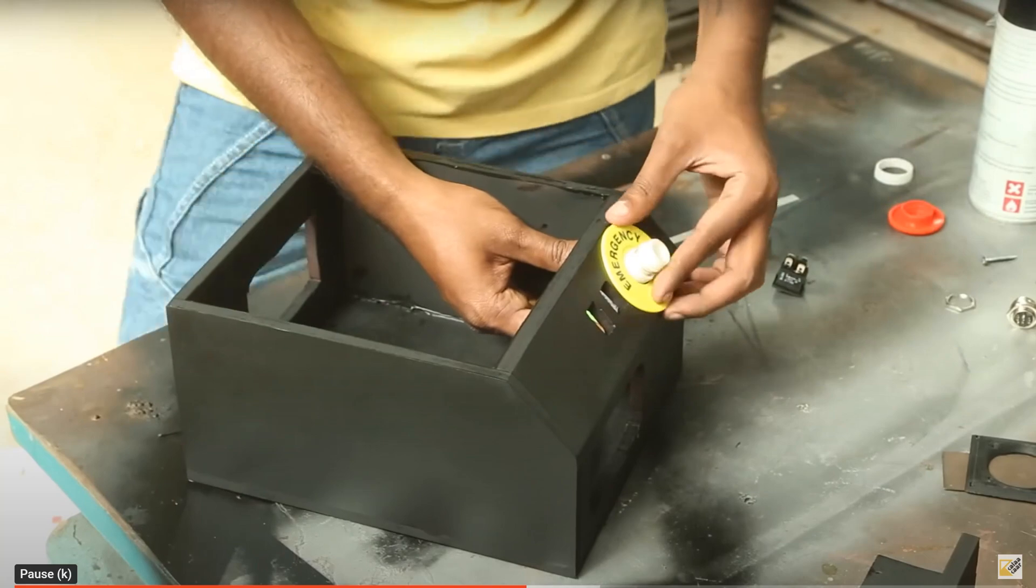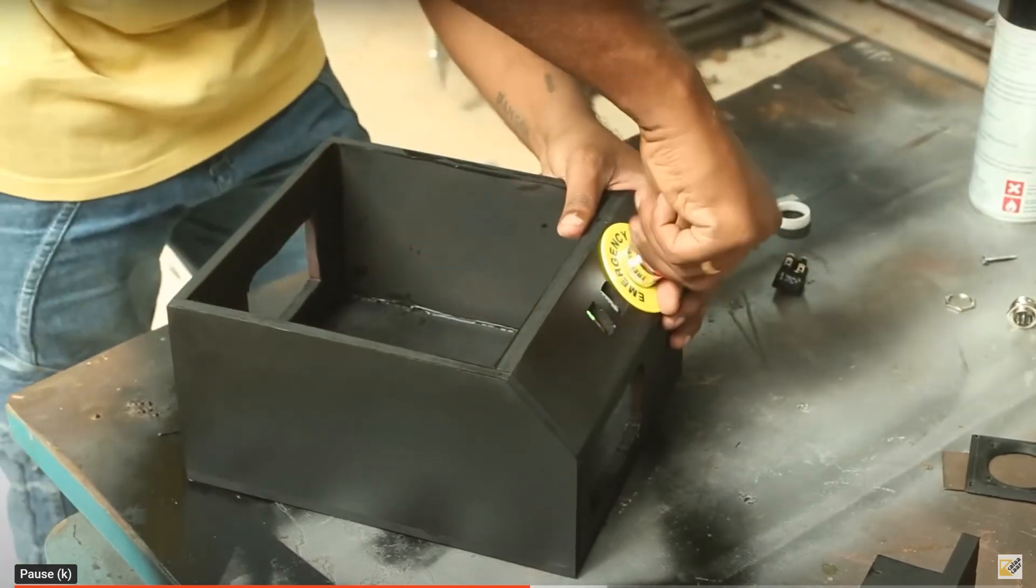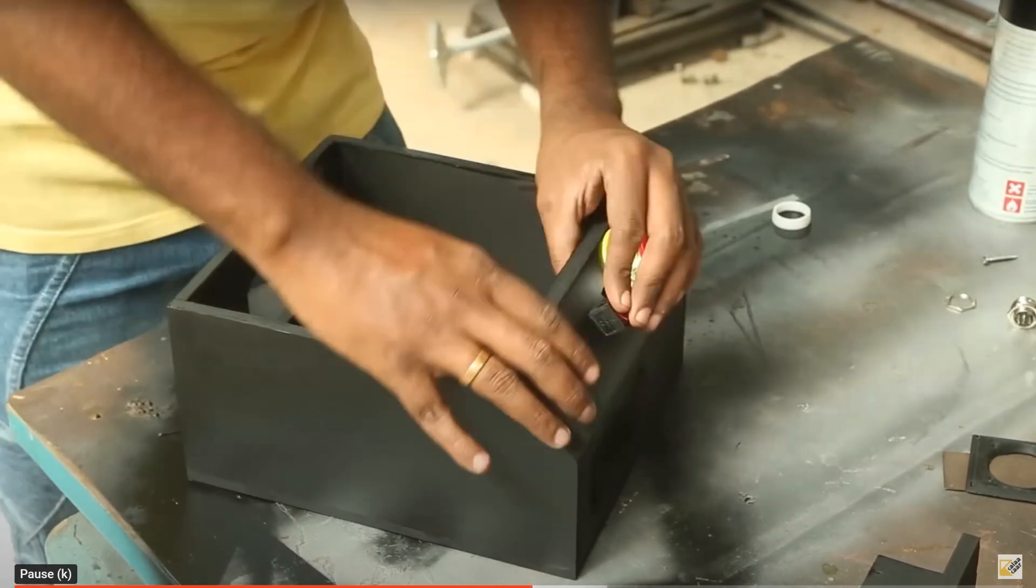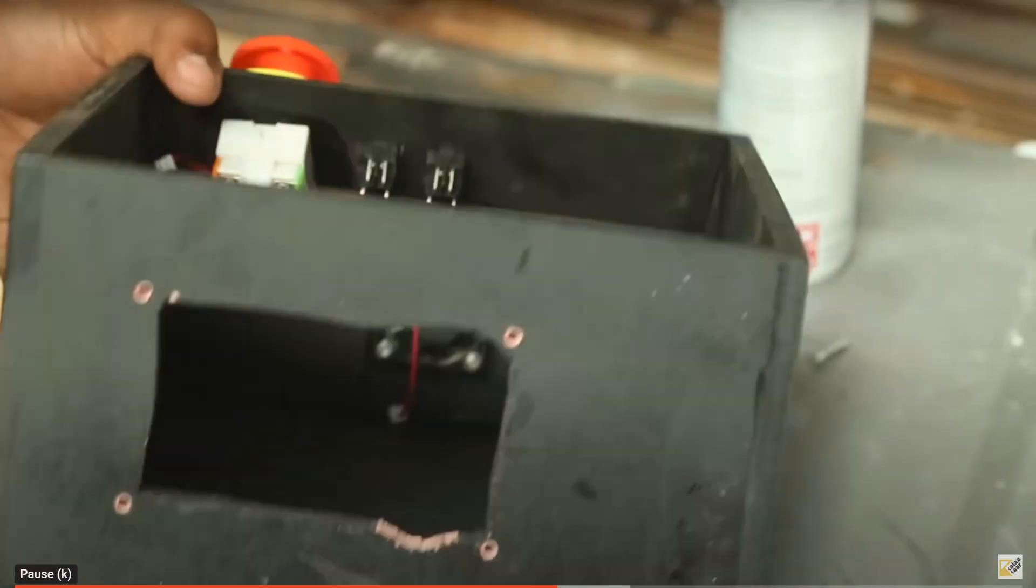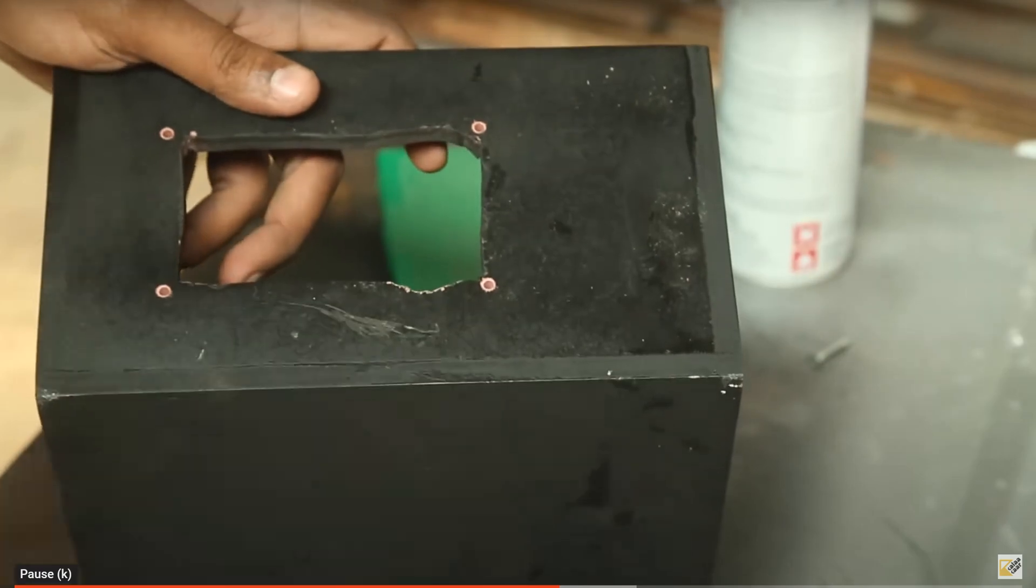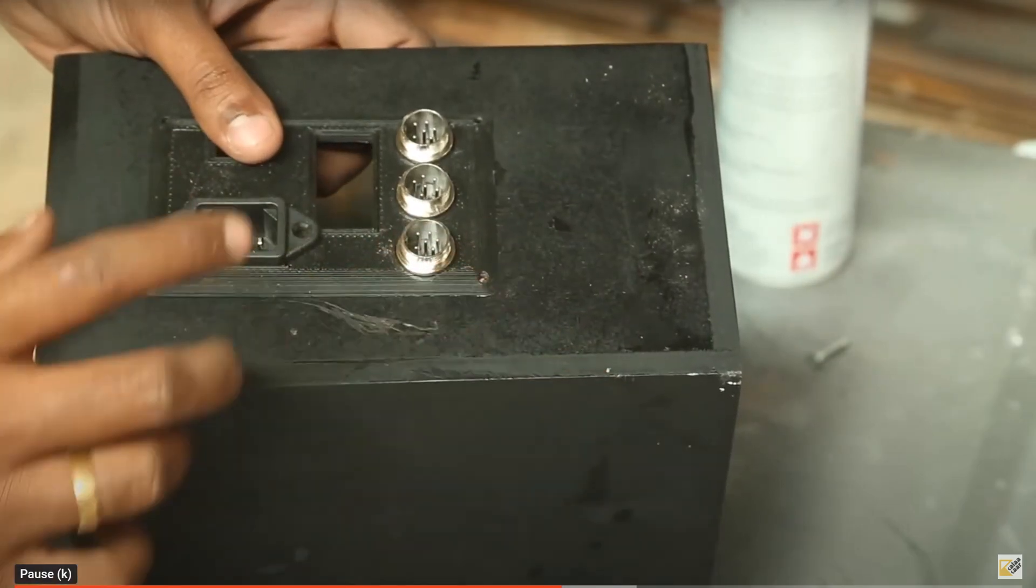Then I can put on the emergency switch and other components required on the cutouts. And the back plate goes like this once all the wiring.